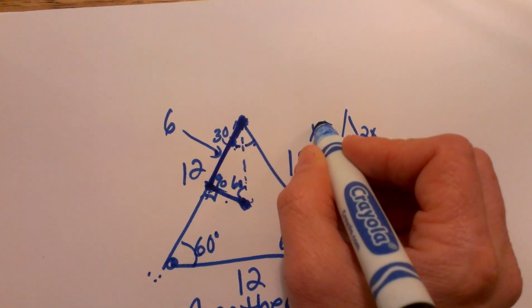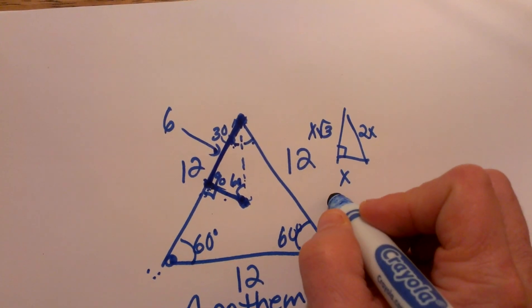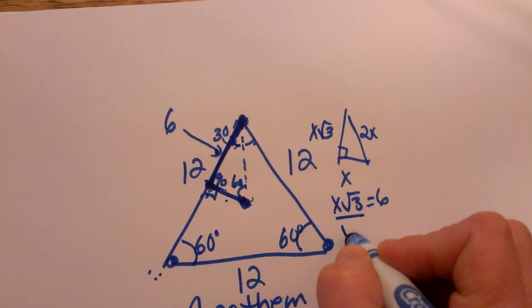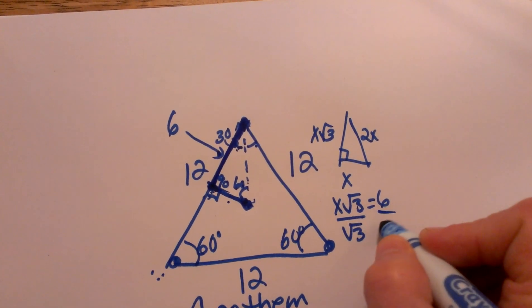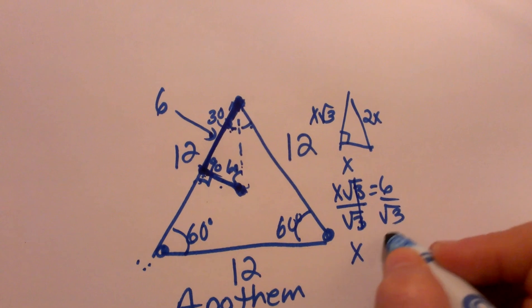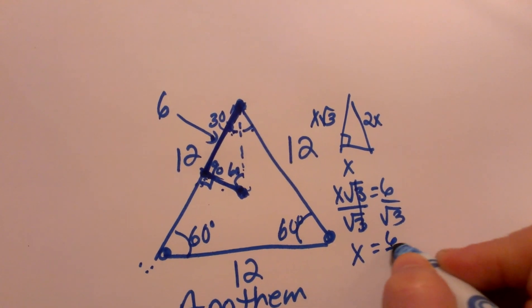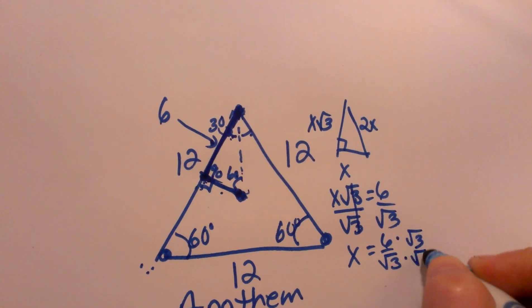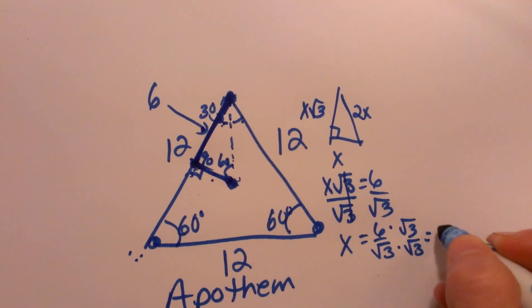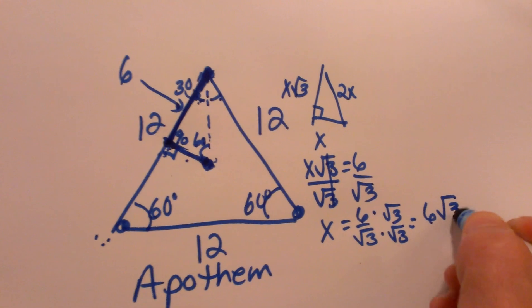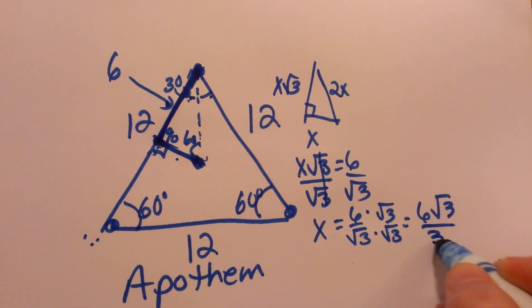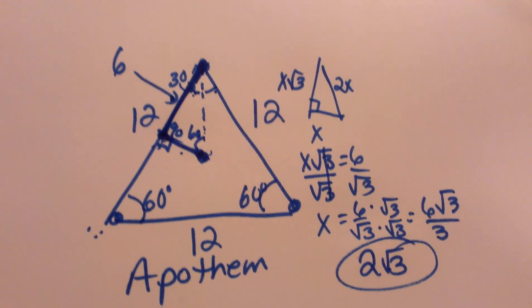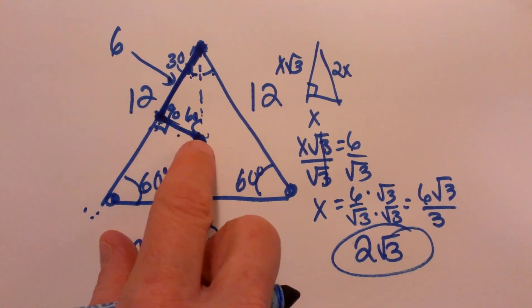So I am going to take x√3 and set it equal to 6 and then just solve. So x√3 is equal to 6, divide by the square root of 3, and I get x is equal to 6 over √3, and then I have to rationalize that denominator. So let's multiply by √3 over √3, and that is going to be 6√3 over 3, which simplifies to 2√3. And there we go, that is what the length of this apothem would be.